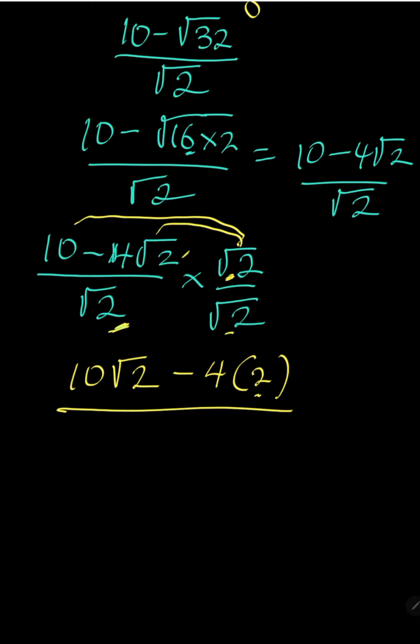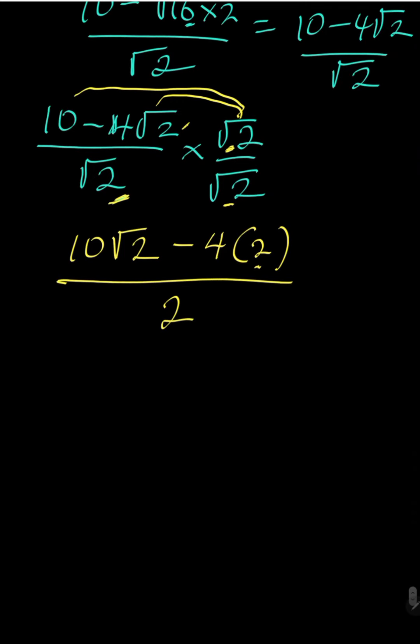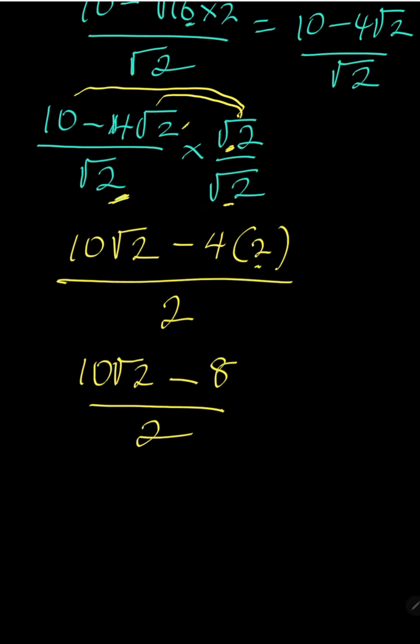All over, the same √2 times √2 is square root of 4 which will give us a 2. So, we are now having 10√2 minus 4 times 2 is the same as 8, everything all over 2.